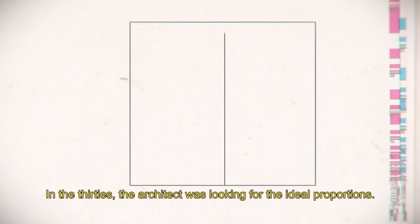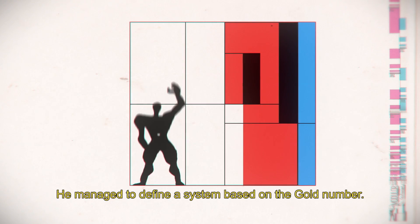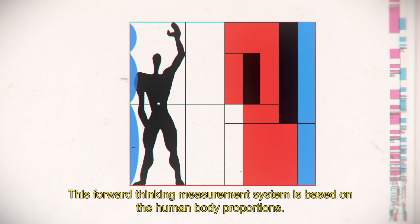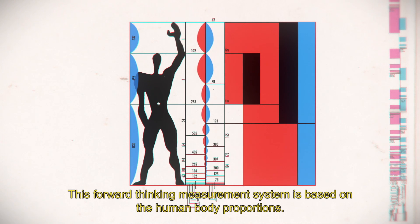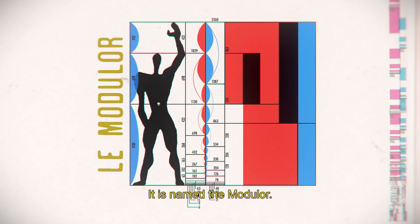In the 1930s, the architect was looking for ideal proportions. He managed to define a system based on the golden number. This forward-thinking measurement system is based on human body proportions. He even gave a name to this ideal standard of modern architecture — it is named the Modulor.